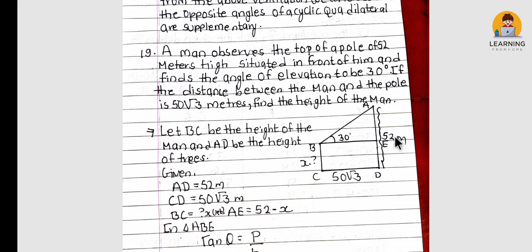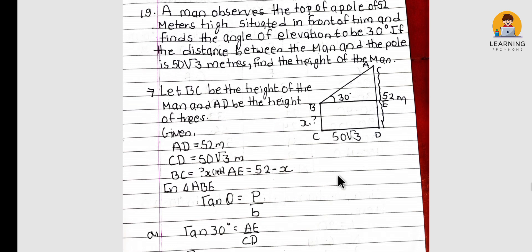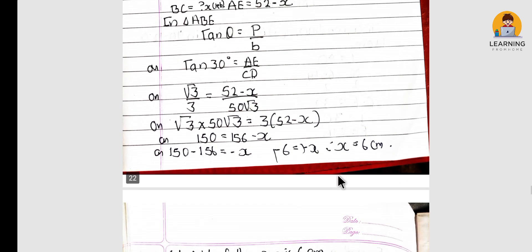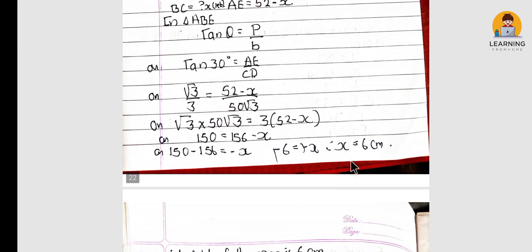The pole is 52 meters. The angle of elevation is 30° and the distance is 50√3 meters. Solving using trigonometry, the height of the man is 2 meters.